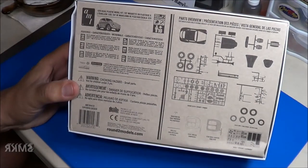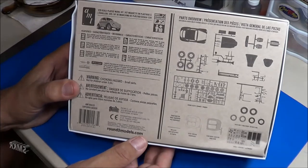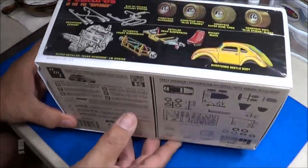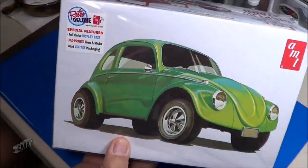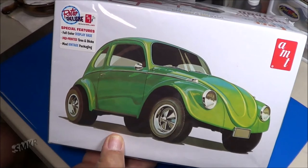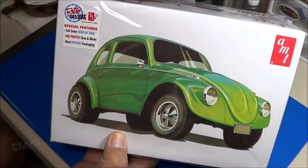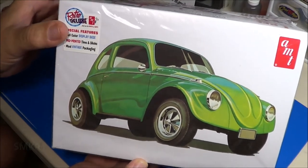And there you have it. This was the AMT Super Bug Gasser, a reissue from early 1970s. Comes with a detailed engine and chassis, the same chassis that you'll find in the Meyers Manx release and the Streetle Beetle. Thanks for watching everybody. Happy modeling everybody.